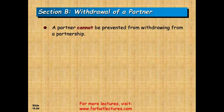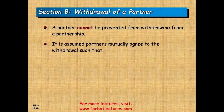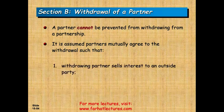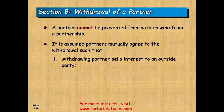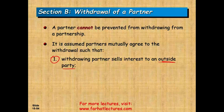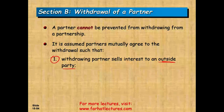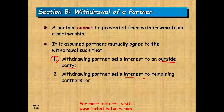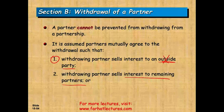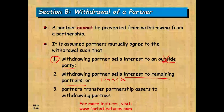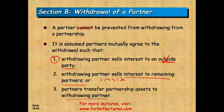A partner cannot be prevented from withdrawing from a partnership. Remember, the partnership is a voluntary association, so a partner can withdraw. It is assumed that partners mutually agree to withdrawals. The withdrawing partner can sell their interest to an outside party — this could be agreed upon when the partnership starts. Alternatively, they can sell their interest to the remaining partners, or the partnership can transfer assets to the withdrawing partner — basically cash them out and they leave.